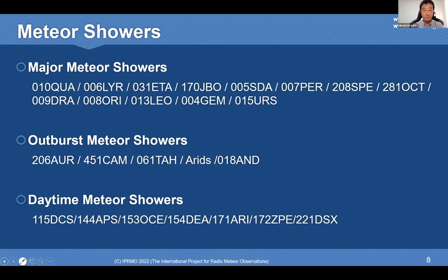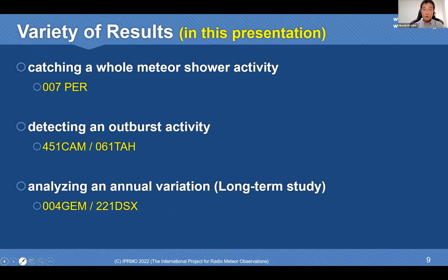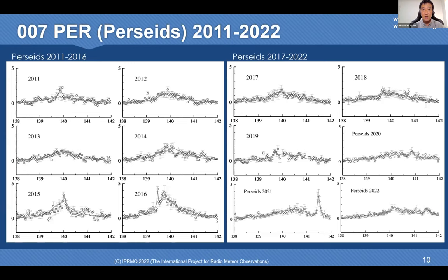In this presentation I will introduce some examples of each. First, IPRMO reports activity using worldwide data every year. In 2001, as you know, an unexpected Leonid peak was observed in America. Although it was daytime in Europe and Japan, IPRMO succeeded in catching this activity. There is also a possibility that small activity appeared at a nearby solar longitude. IPRMO makes clear the whole meteor shower activity using worldwide data.